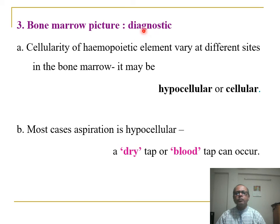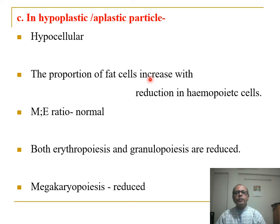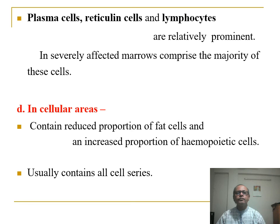You must memorize the bone marrow findings in aplastic anemia. Cellularity of the hemopoietic elements varies at different sites — it may be hypocellular or cellular. In most cases aspiration is hypocellular; a dry tap or blood tap can occur. In hypocellular bone marrow, the proportion of red cells increases with reduction in hemopoietic cells; M:E ratio is normal because both erythropoiesis and granulopoiesis are reduced. Megakaryopoiesis is also reduced. Plasma cells, reticulin cells, and lymphocytes are relatively prominent.